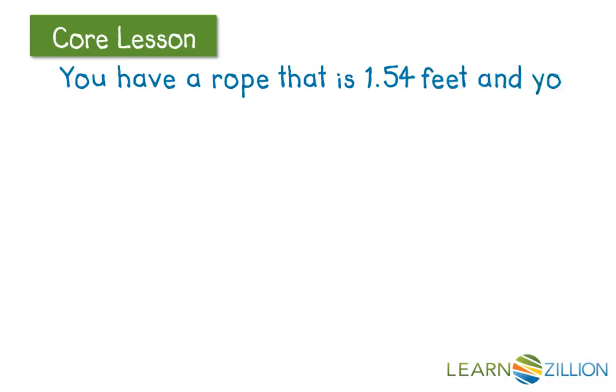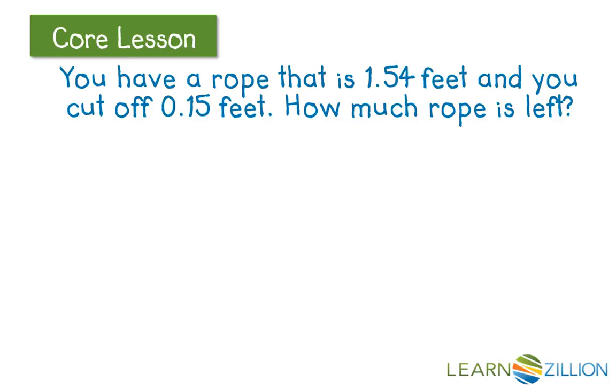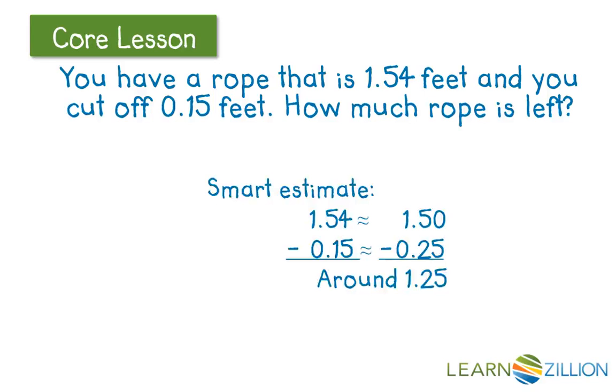Let's try another one. You have a rope that's 1 and 54 hundredths feet and you cut off 15 hundredths feet. How much rope is left? Well, let's start with our smart estimate. 1 and 54 hundredths could be rounded to 1 and 50 hundredths. And 15 hundredths could be rounded to 25 hundredths. So I'm going to say that our answer is going to be around 1 and 25 hundredths.